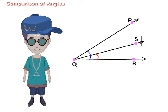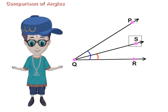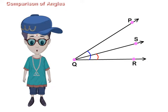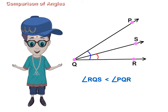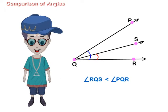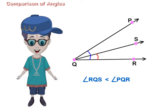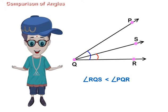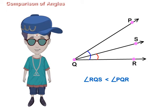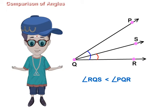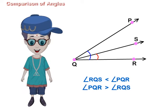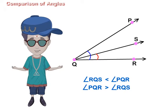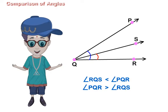S lies in the interior of angle PQR. Clearly, angle RQS is smaller than angle PQR. That is, angle RQS is smaller than angle PQR, or angle PQR is greater than angle RQS.